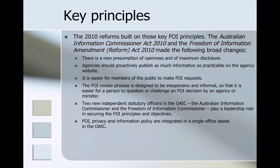The 2010 reforms built on these key FOI principles. The Information Commissioner Act of 2010 and the Freedom of Information Amendment Reform Act of 2010 made broad changes. There is a new presumption of openness and maximum disclosure. Agencies are required to proactively publish as much information as practicable on the agency website. The process is designed to be inexpensive and informal, making it easier to review FOI decisions. Two new independent statutory officers — the Information Commissioner and the Freedom of Information Commissioner — play a leadership role in securing the FOI principles and objectives. And finally, FOI, privacy and information policy are integrated into a single office.